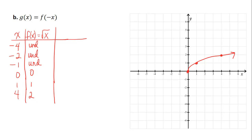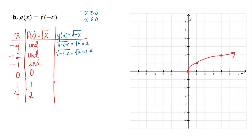Now let's look at g(x) = f(-x), so g(x) = √(-x) — we replace the input with -x. Notice that the domain of this function changes because the radicand must be ≥ 0. Dividing by -1, the domain becomes x ≤ 0. In the original function we couldn't input negative values, but now we have to. So: √(-(-4)) = √4 = 2; √(-(-2)) = √2 ≈ 1.4; √(-(-1)) = √1 = 1; and √(-(0)) = 0.